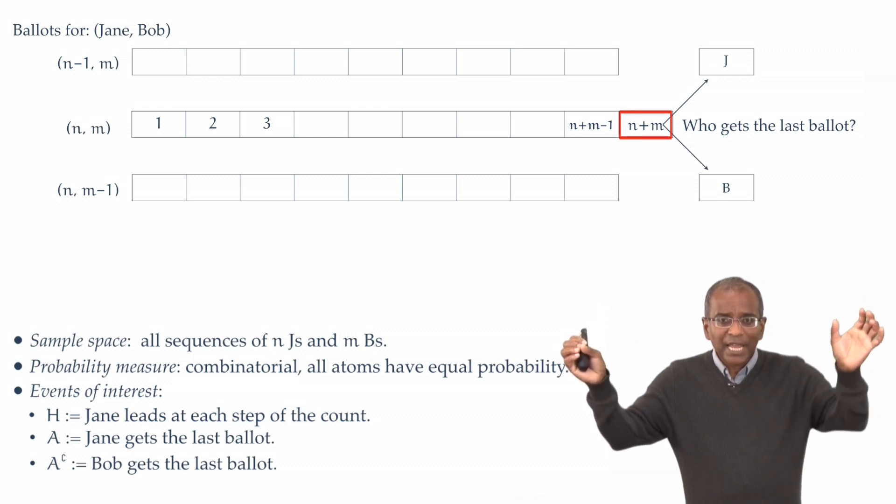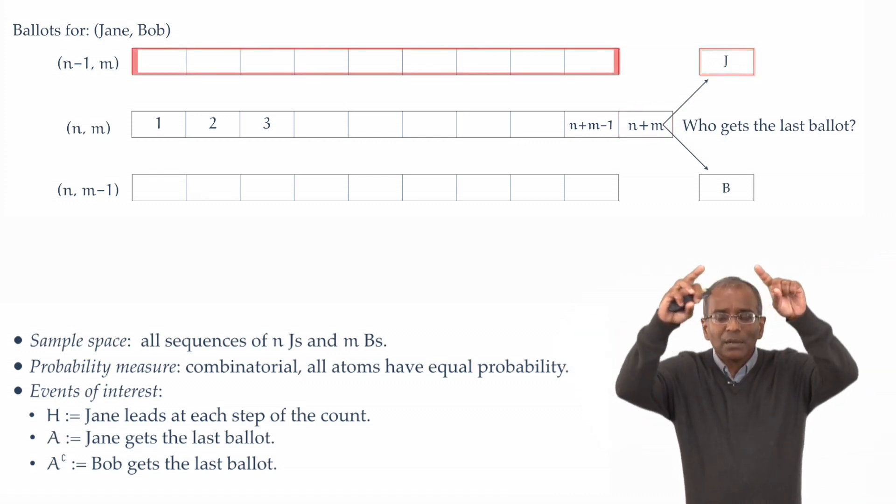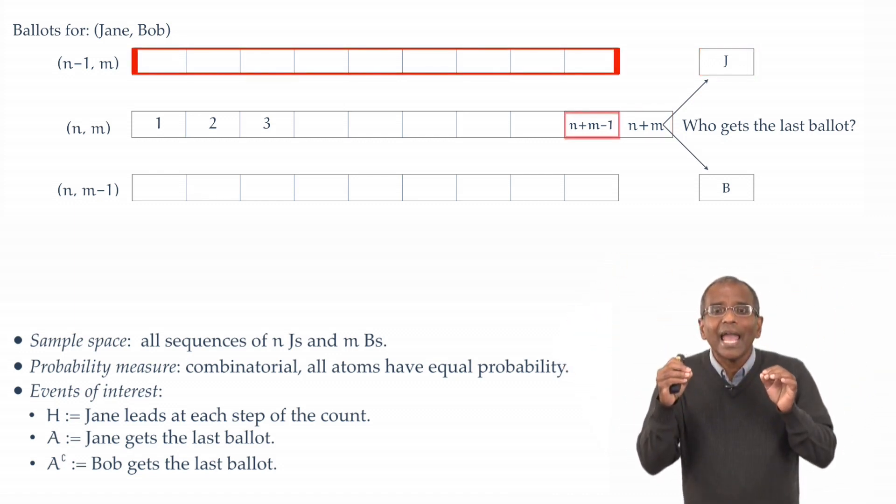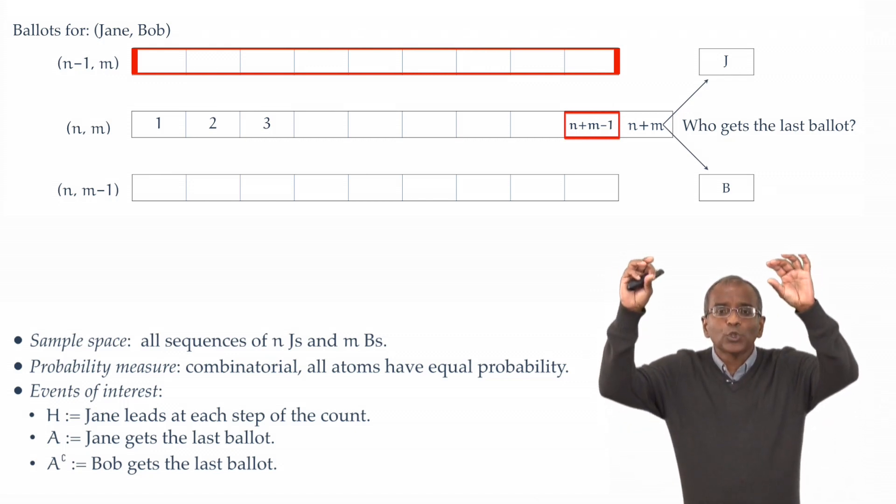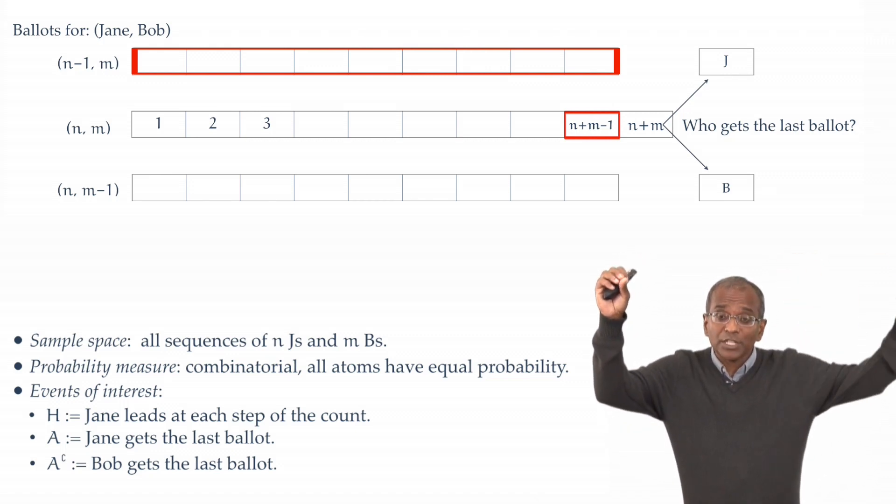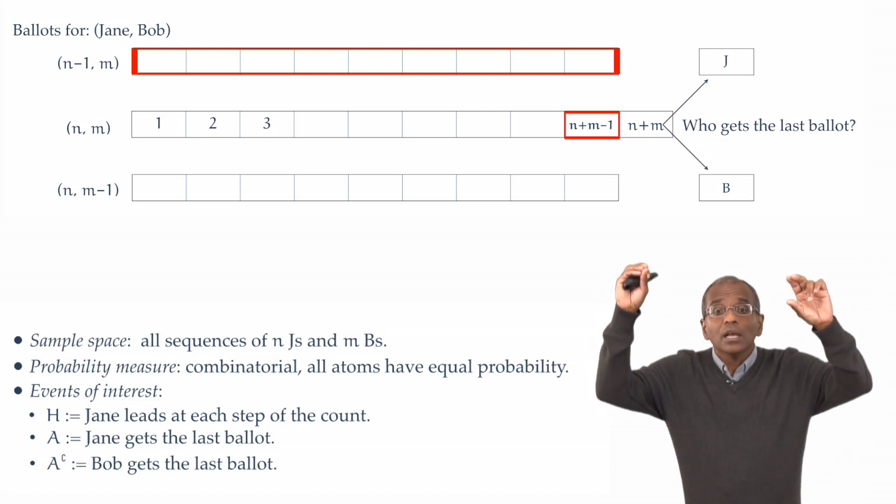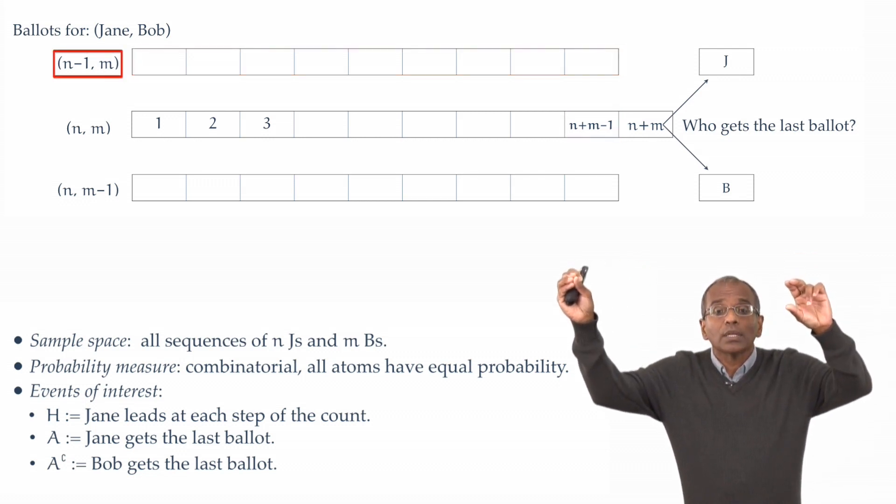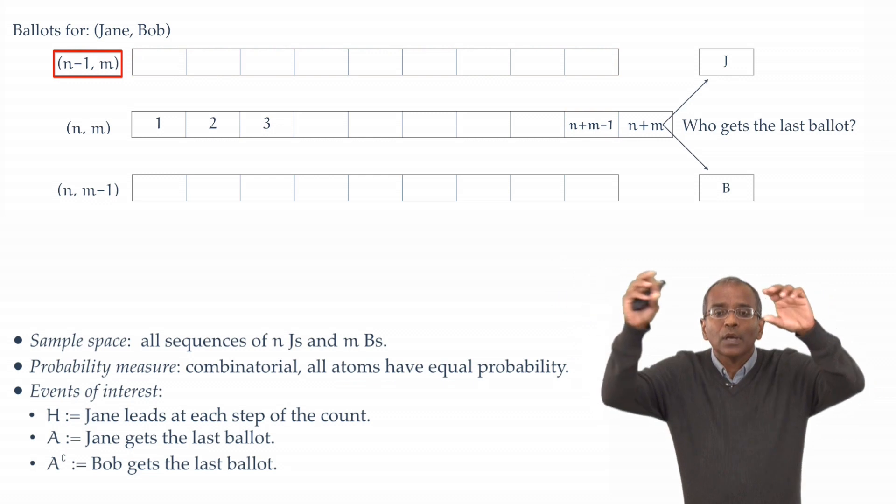If Jane gets the last ballot, then the remaining ballots are n plus m minus 1 in number. And of those ballots, remember, Jane gets the last ballot. Jane now gets n minus 1 and Bob gets m of the first n plus m minus 1 ballots.